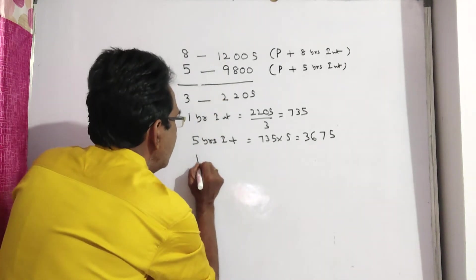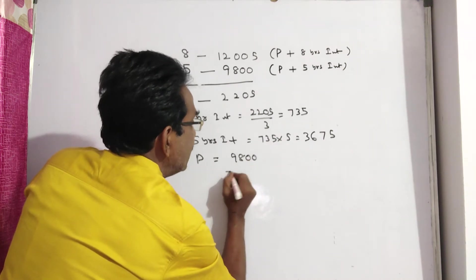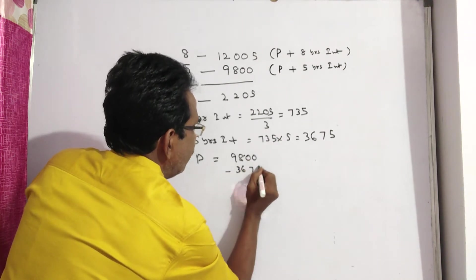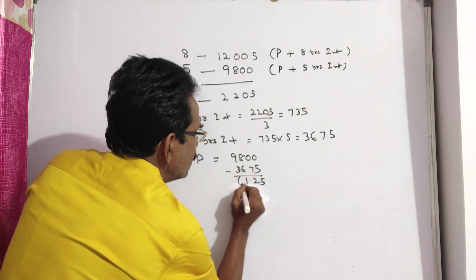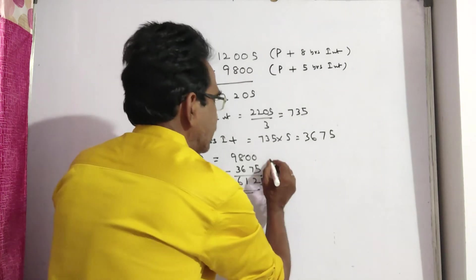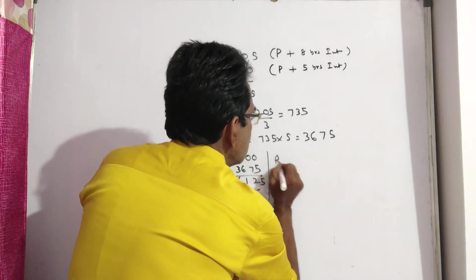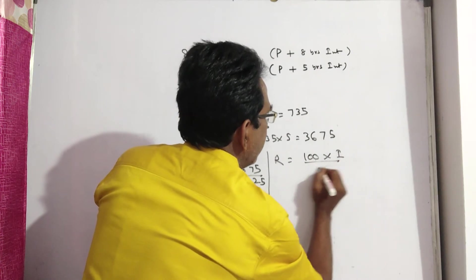Now principal is equal to 9800 minus 3675 equals 6125. Now let us find rate of interest R. R is equal to 100I by PT.